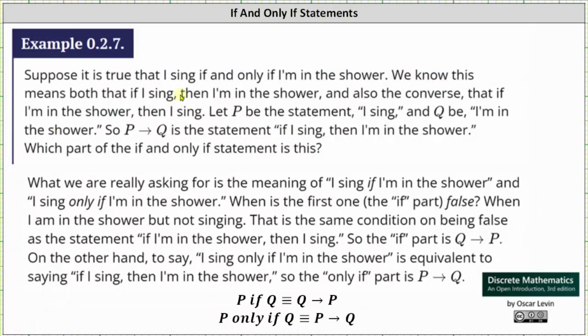Suppose that it is true that I sing if and only if I'm in the shower. We know this means both that if I sing then I'm in the shower and also the converse that if I'm in the shower then I sing. Let P be the statement I sing and Q be the statement I'm in the shower. So if P then Q is the statement if I sing then I'm in the shower. Which part of the if and only if is this?